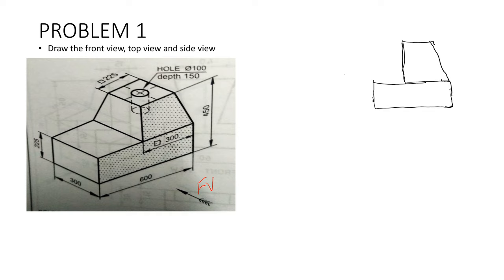When you see here, we have the hollow region and this hollow region has been shown as hidden lines. It has already been given in the diagram with a depth of 150 mm. We can clearly indicate the hidden lines showing that the depth is 150 mm. After making it, we are going to move to the top view now.